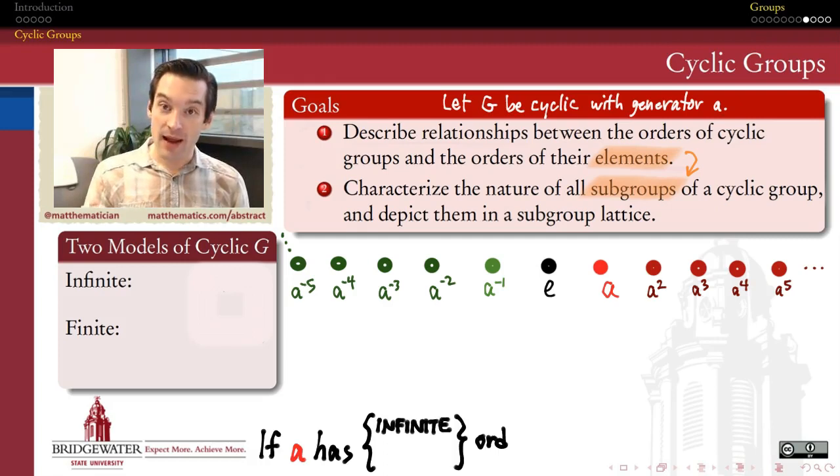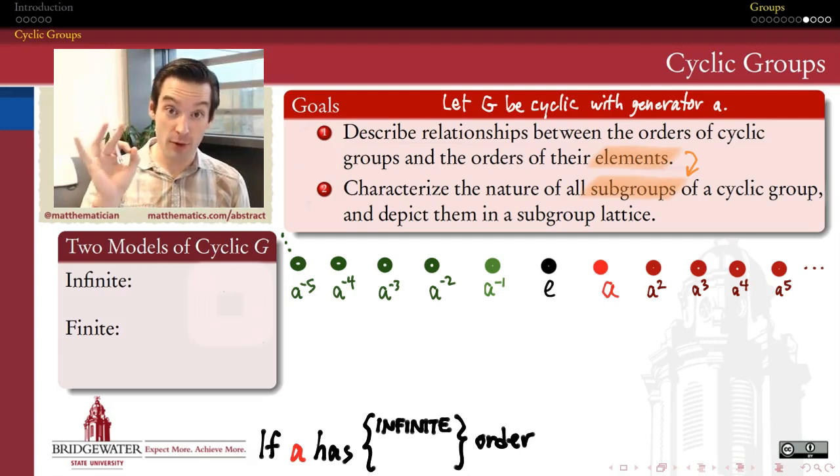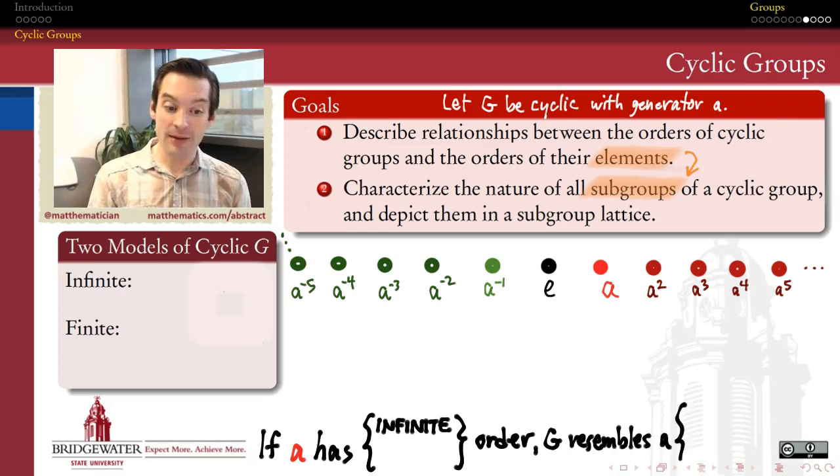And indeed, if A is an element that has infinite order, so in other words, if none of these powers of A are equal once again to the identity element, if the only power of A that equals the identity element is the zeroth power of A, then this is the picture that I want in my mind's eye for what the cyclic group looks like, cyclic group generated by A, and it looks an awful lot like a number line. So the picture that I have in my mind about what an infinite cyclic group looks like is just a picture of the integers, where the operation on the integers is the operation of addition.